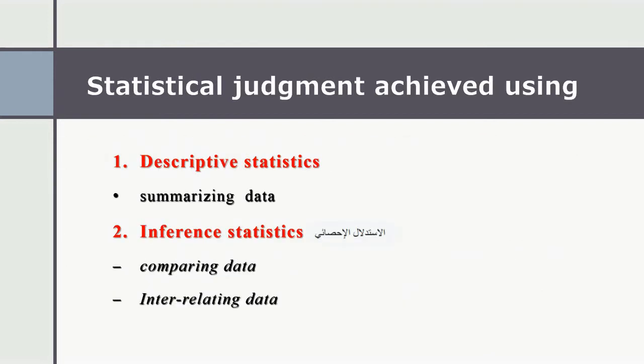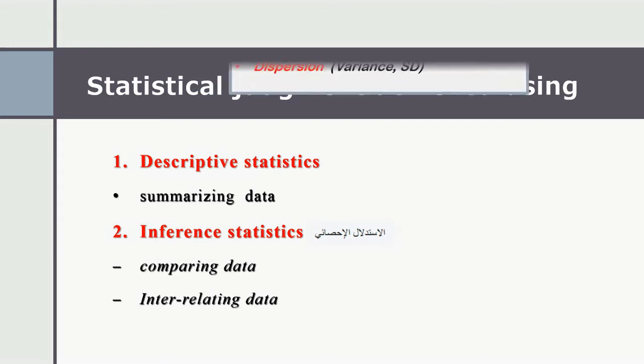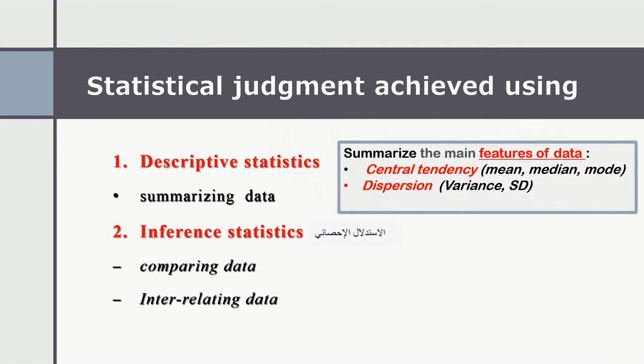Statistical judgment is achieved using descriptive statistics or inference statistics. Descriptive statistics summarizes data, like the central tendency or the dispersion of the data. On the other hand, inference statistics can be achieved by comparing data or interrelating data.